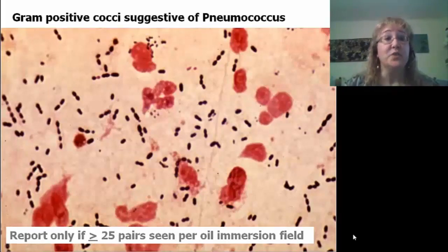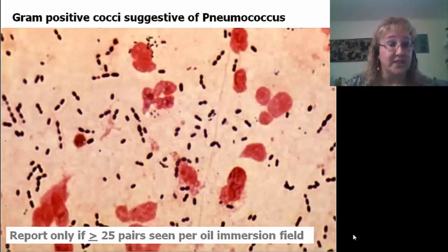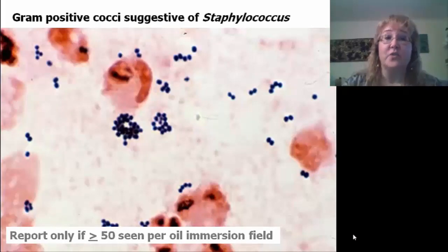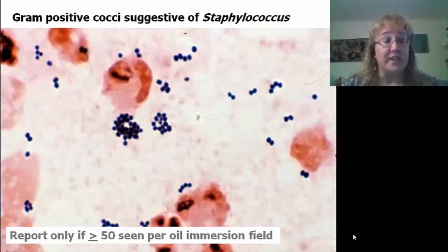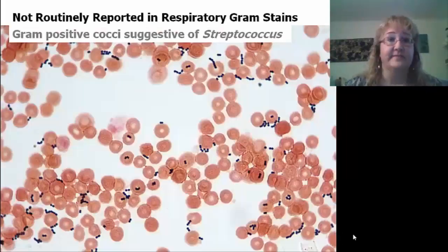Here are the classic lancet-shaped gram-positive, usually diplococci, sometimes short chains of Streptococcus pneumoniae. Rather than just calling them gram-positive diplococci, we can report them as gram-positive cocci suggestive of pneumococcus, remembering that we need to see at least 25 pairs per oil immersion field. Here are the classic gram-positive cocci in clusters we associate with Staphylococcus — we can report them as gram-positive cocci suggestive of Staphylococcus, requiring at least 50 in the direct gram stain.